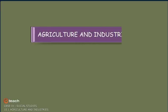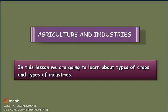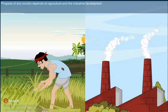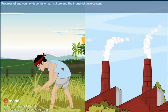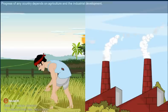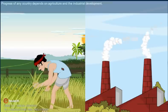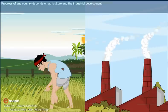Agriculture and Industries. In this lesson, we are going to learn about types of crops and types of industries. The progress of any country depends on agriculture and industrial development.